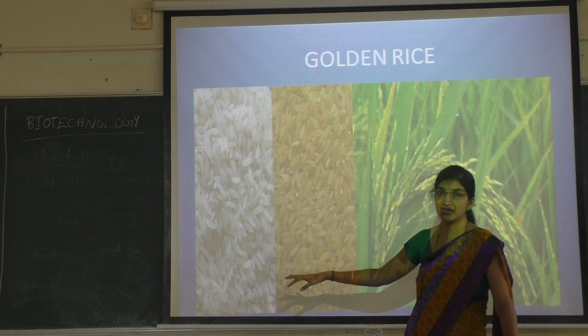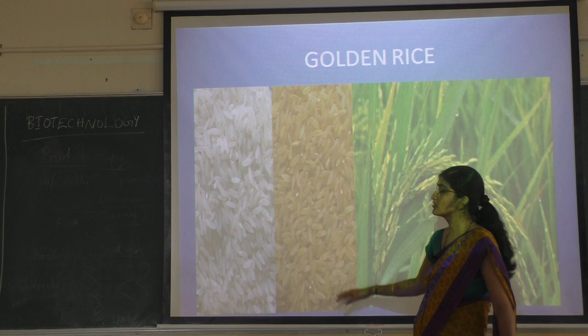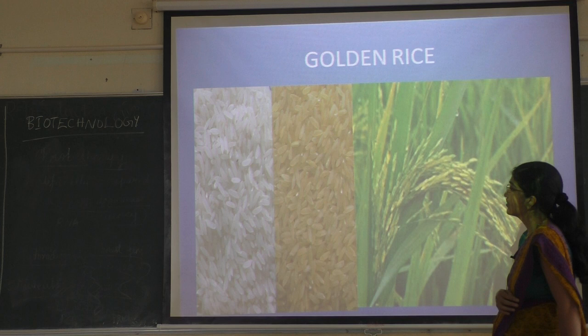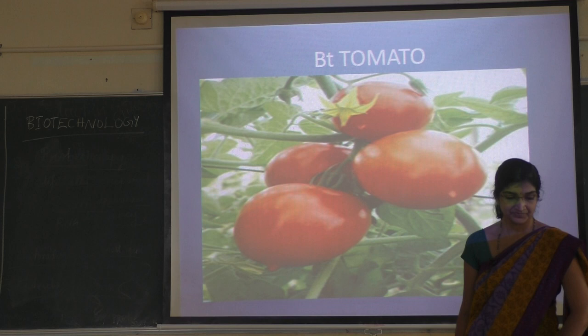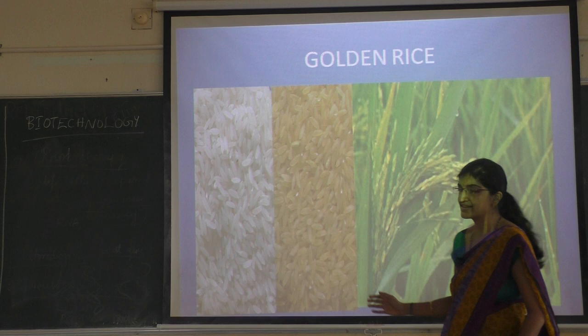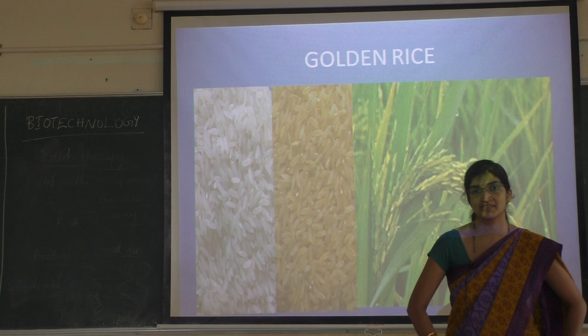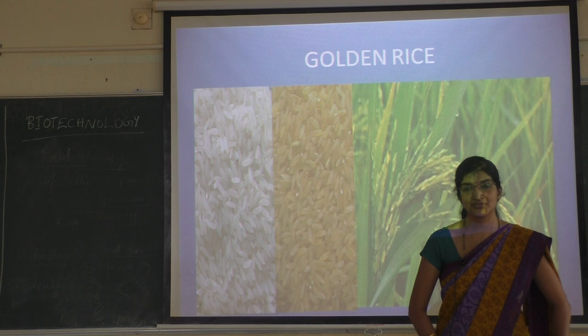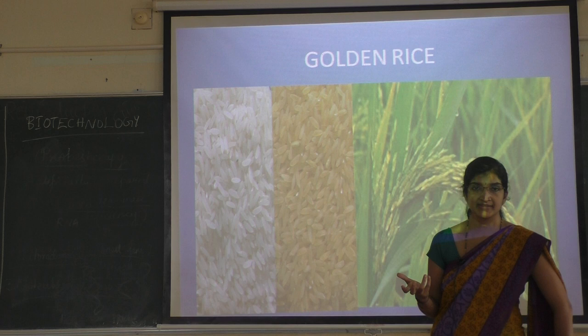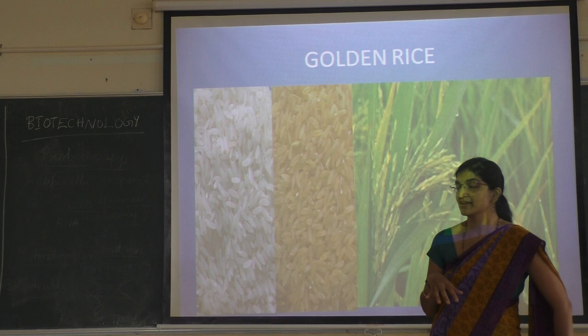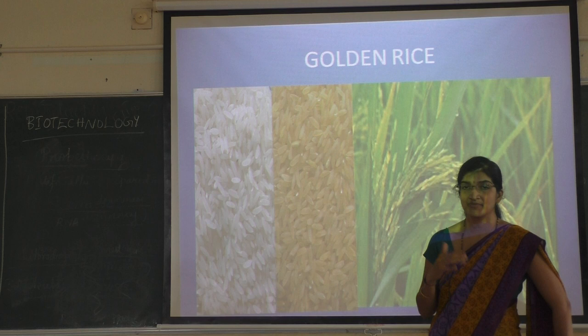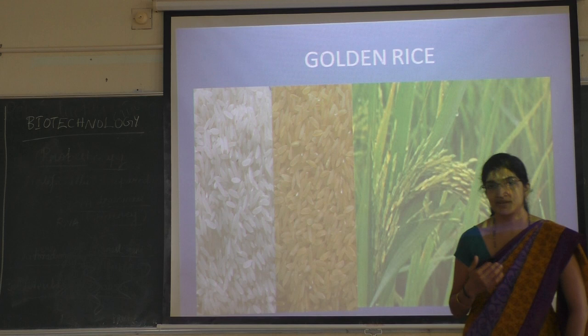Golden rice is a golden or yellowish colored rice, which is rich in vitamin A, unlike normal white rice. Children suffer from vitamin A deficiency, which causes eyesight problems. So instead of giving extra medicinal supplements, golden rice can be used. Since rice is our normal food, using golden rice can overcome that vitamin A deficiency.